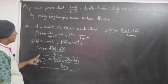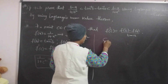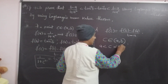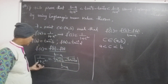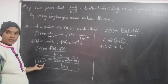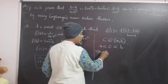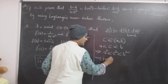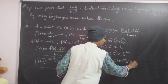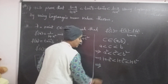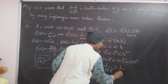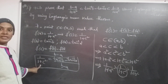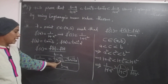If we have a relation between A and B, clearly by Lagrange's mean value theorem C belongs to (A, B), that is A is less than C is less than B. Squaring both sides: A squared is less than C squared is less than B squared. Adding 1 on both sides: 1 plus A squared is less than 1 plus C squared is less than 1 plus B squared. Taking reciprocals, the inequalities reverse: 1 by 1 plus A squared is greater than 1 by 1 plus C squared is greater than 1 by 1 plus B squared. Replacing 1 by 1 plus C squared with tan inverse B minus tan inverse A by B minus A gives the inequality.